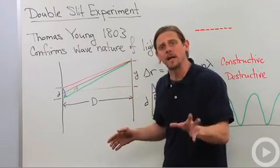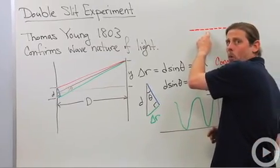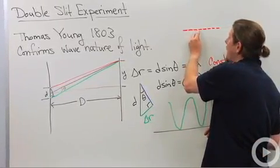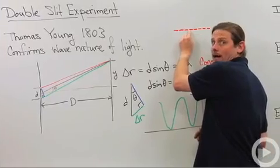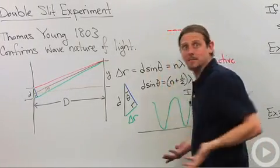And what we end up seeing is something that looks like this. So we have a central maximum where it's very bright, then we've got dark spot, no light at all. Then another maximum, dark spot, maximum, dark spot, maximum.